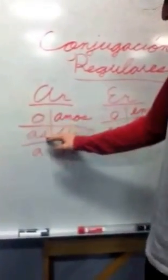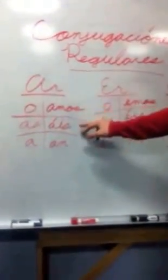Las conjugaciones regulares son para A-R es O, A-S, A, Amos, Ais con acento en la A, A-N.